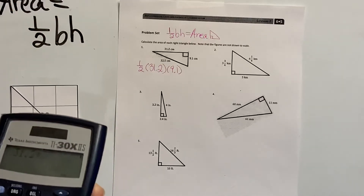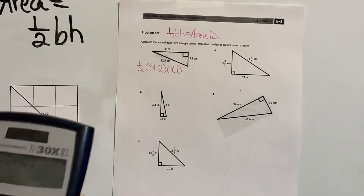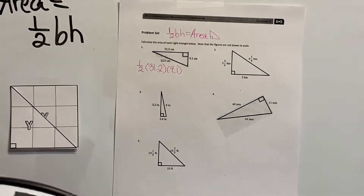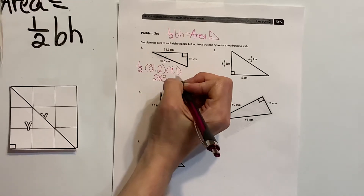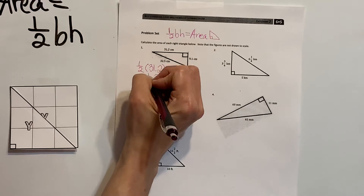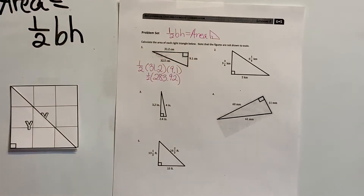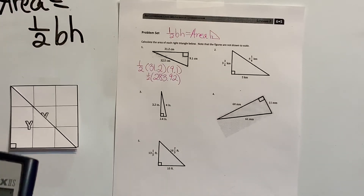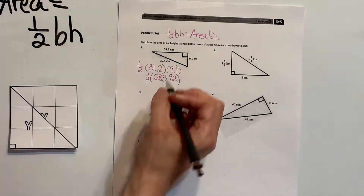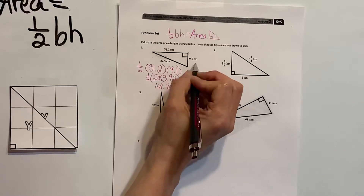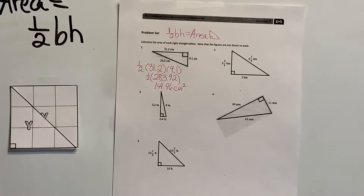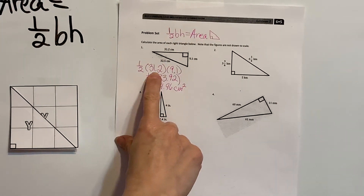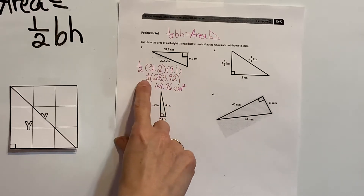When I multiply 31.2 times 9.1, that gives me 283.92. We want half of that, so we divide by 2 and we get 141.96. The measurement is centimeters squared. So we took the base times the height and took half of that to get the area.